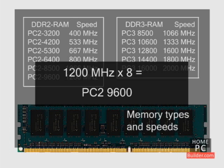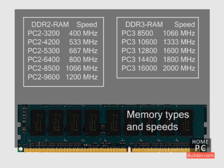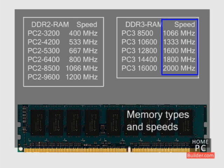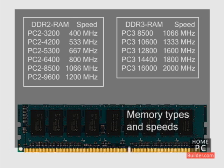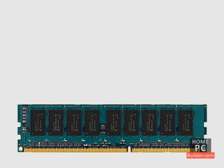This is useful to know when you're shopping for RAM and motherboards, since some shops list only speed and other shops list only bandwidth. By multiplying or dividing by 8, you can be sure a motherboard can support the RAM you buy.